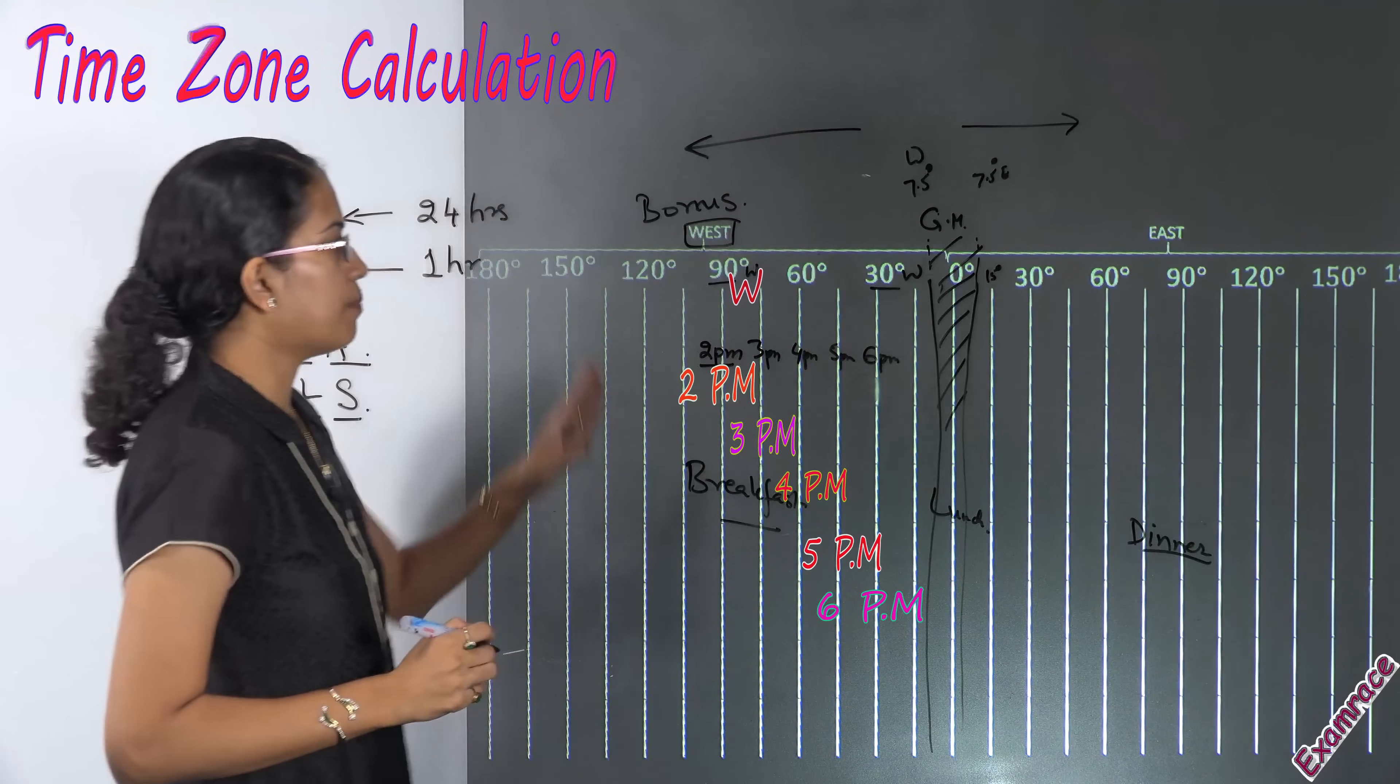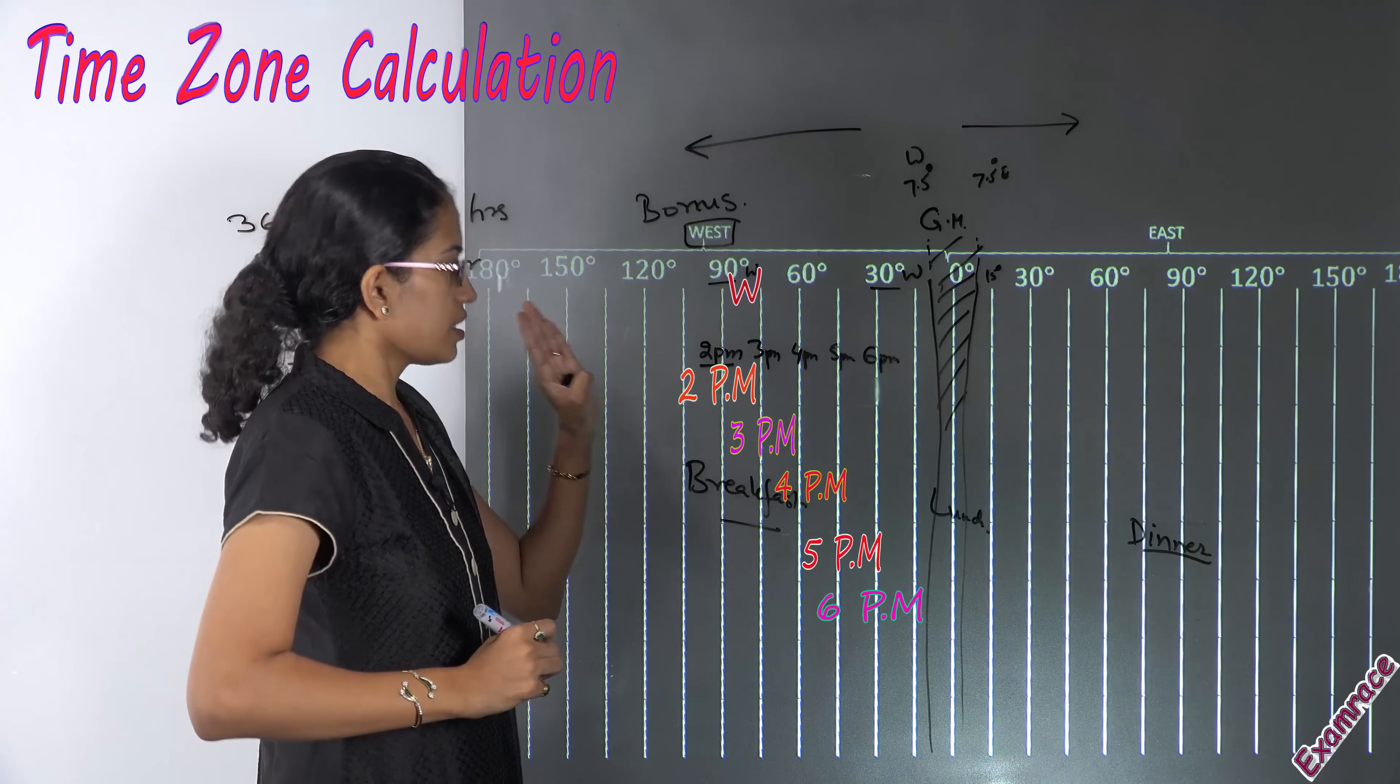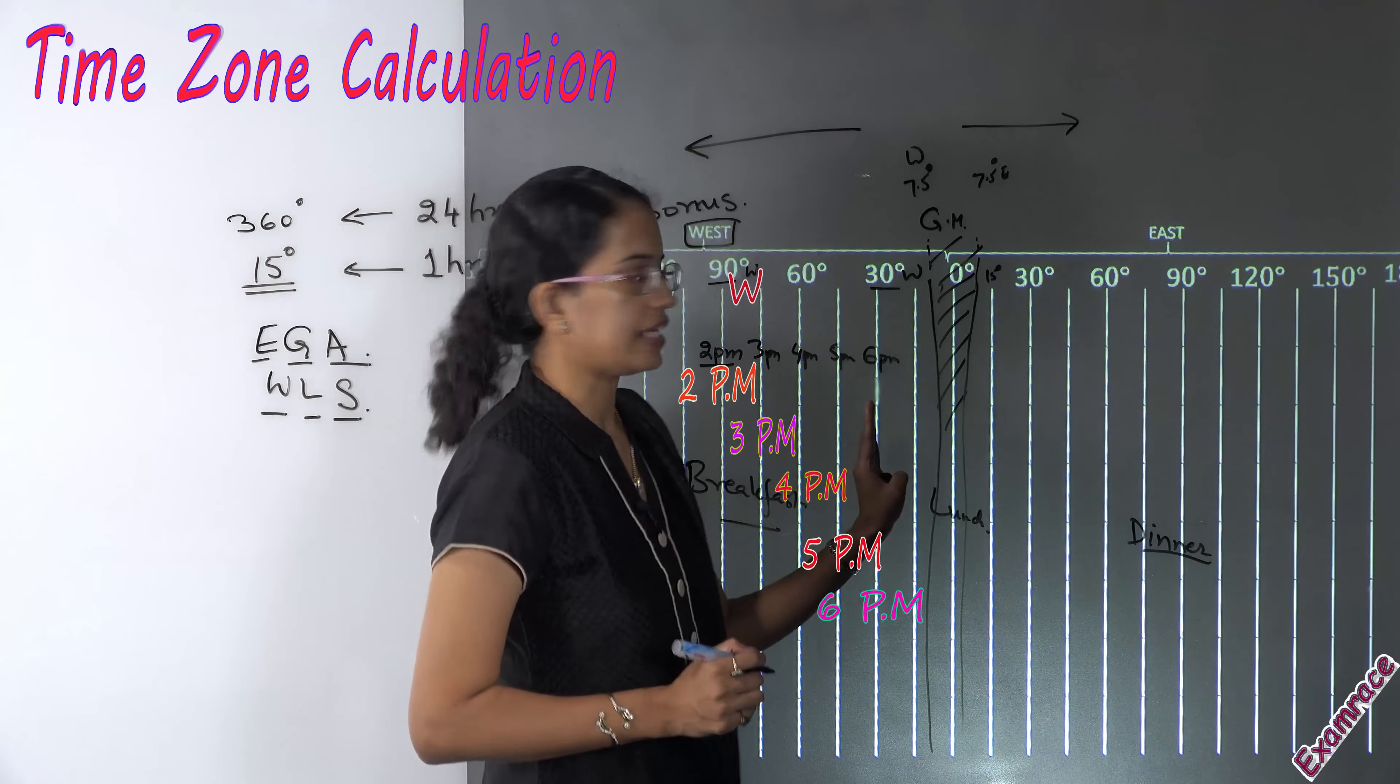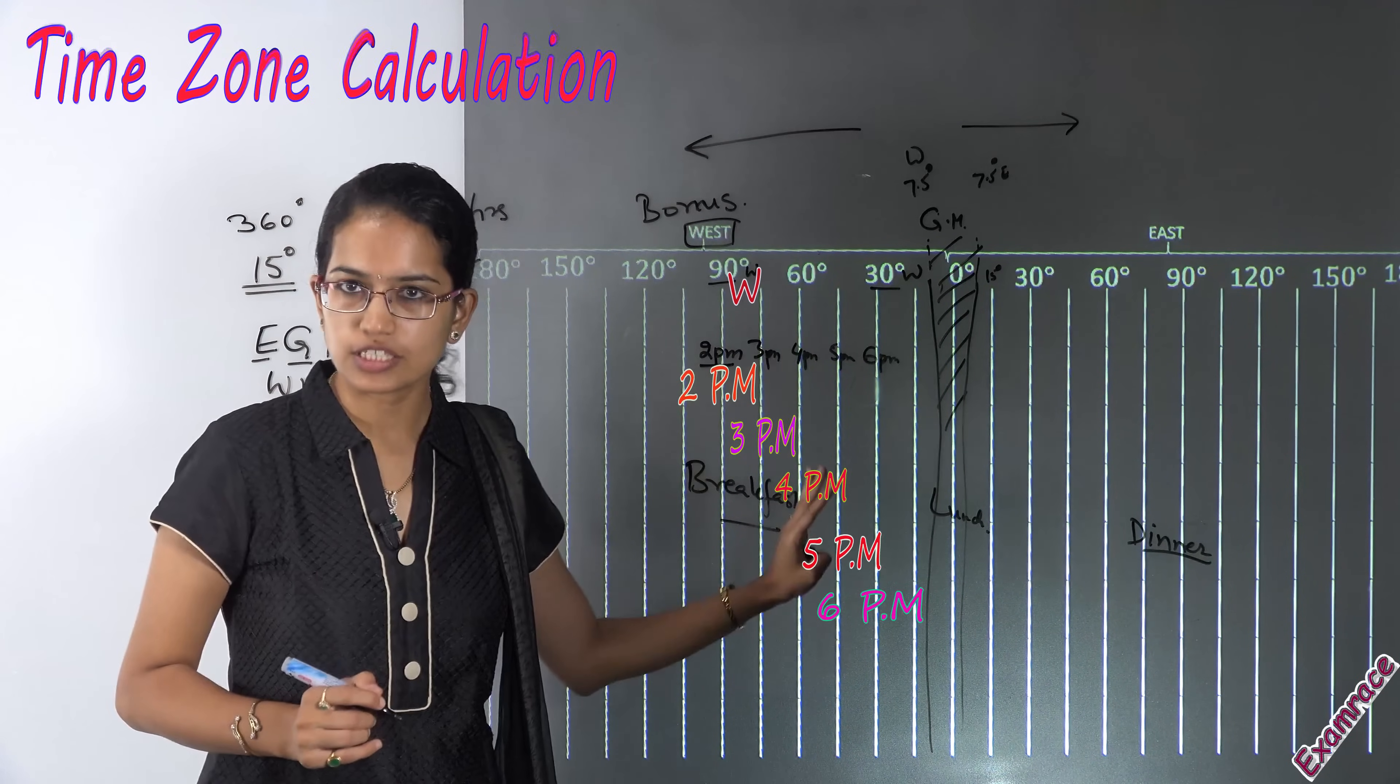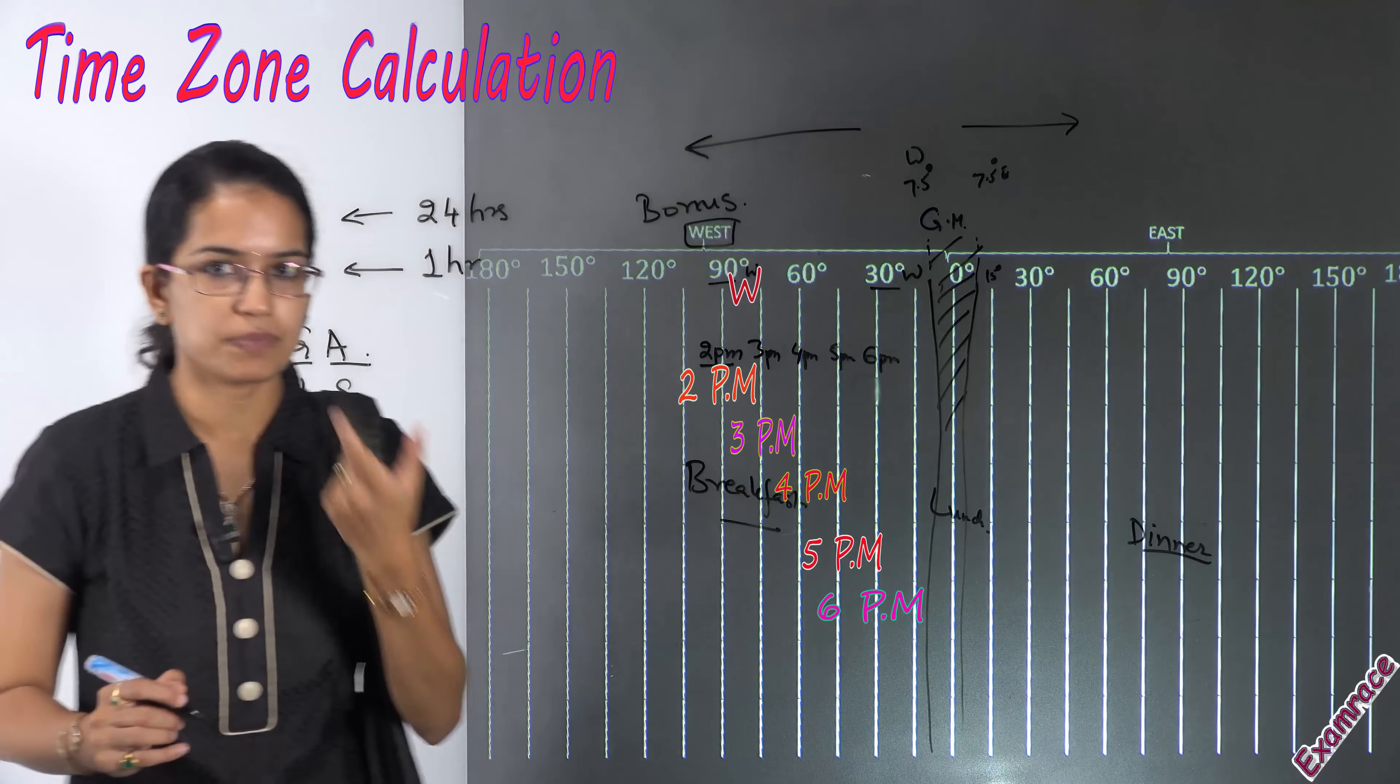At 90 degree west the time is 2 PM. At 30 degree west the time would be 6 PM. That's one way of the questions that could be put up.